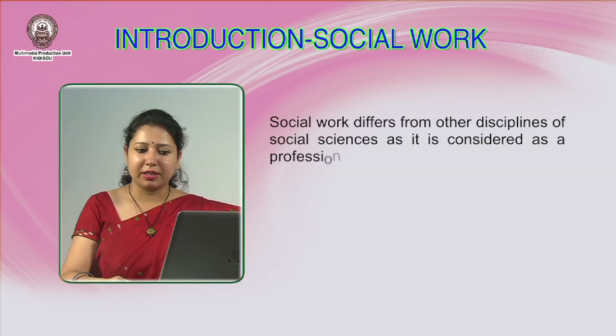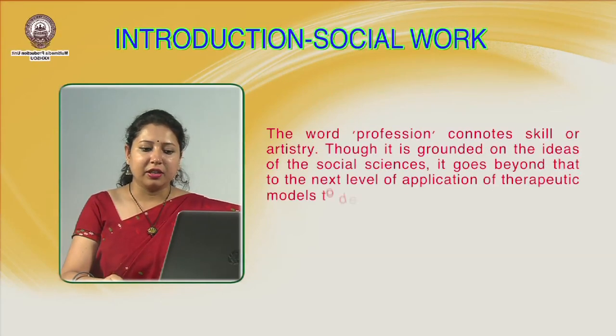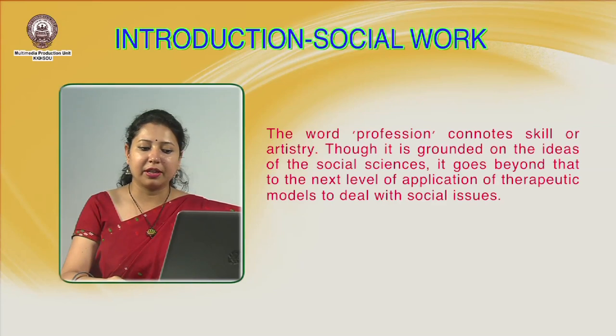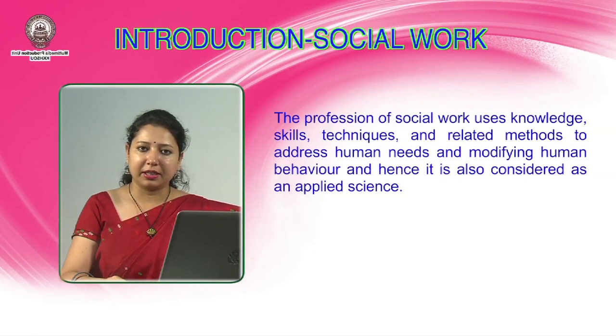Social work differs from other social sciences because it is considered to be a profession. The word profession means that it consists of certain skills and artistry. It is grounded on the ideas of social sciences, but it goes beyond to the next level of application of therapeutic models to deal with social issues. The profession of social work uses skills, techniques and related methods to address human needs and modifying human behavior. Hence, it is also known as an applied science, because it not only tries to understand the theoretical perspective, but also goes beyond to exploring therapeutic models for solution of social issues.